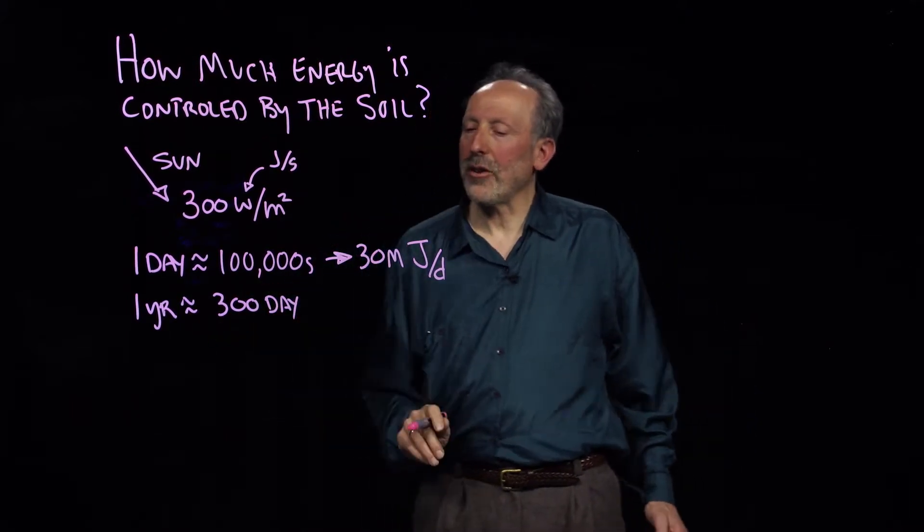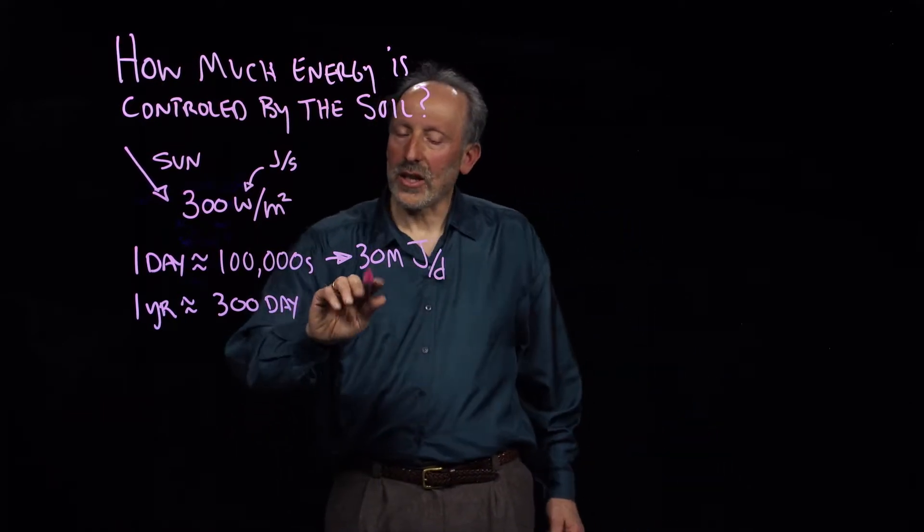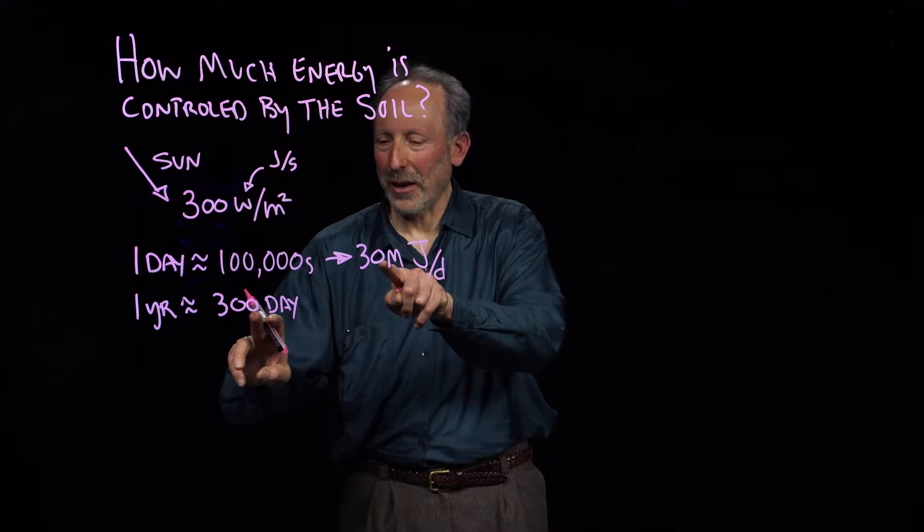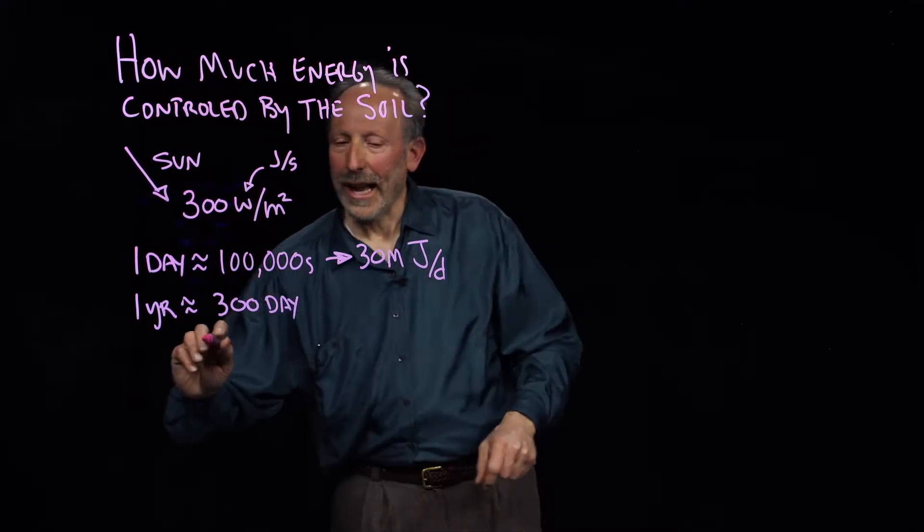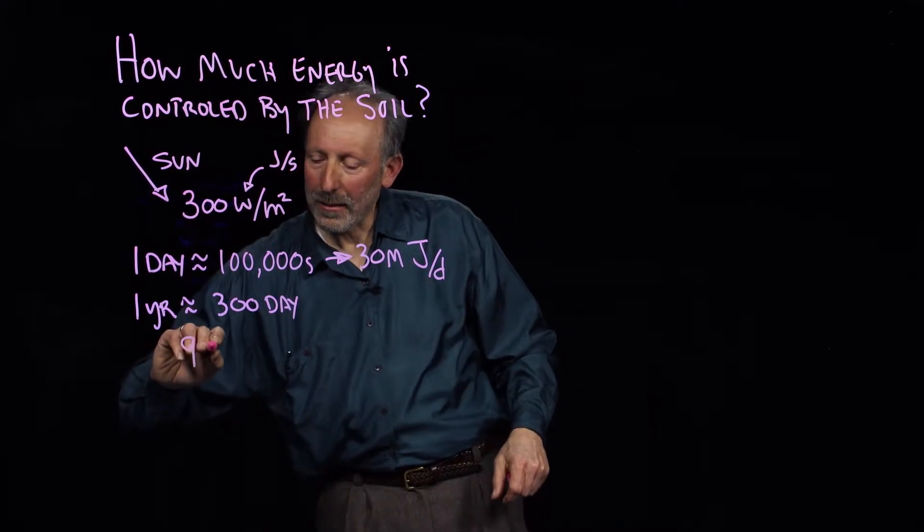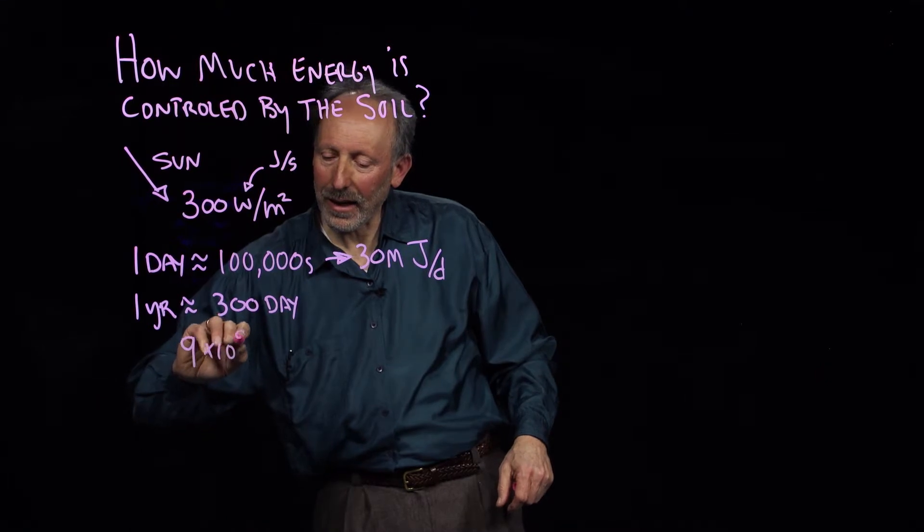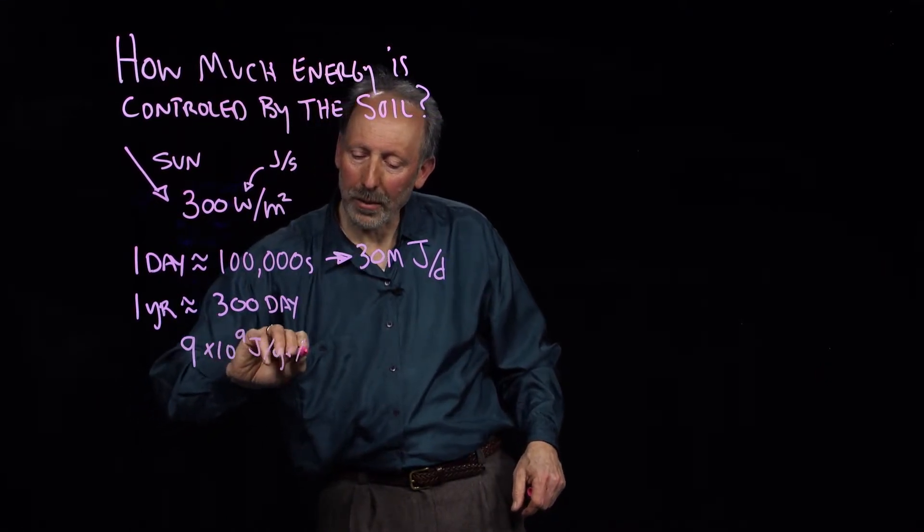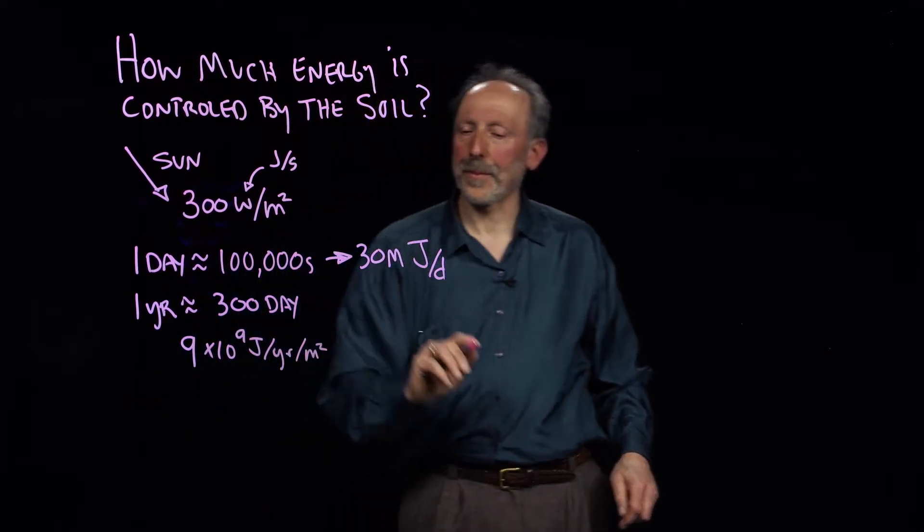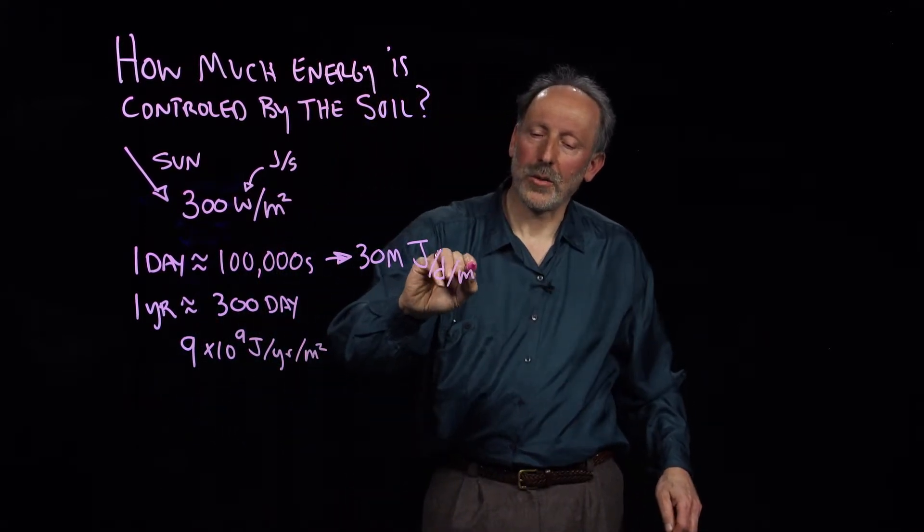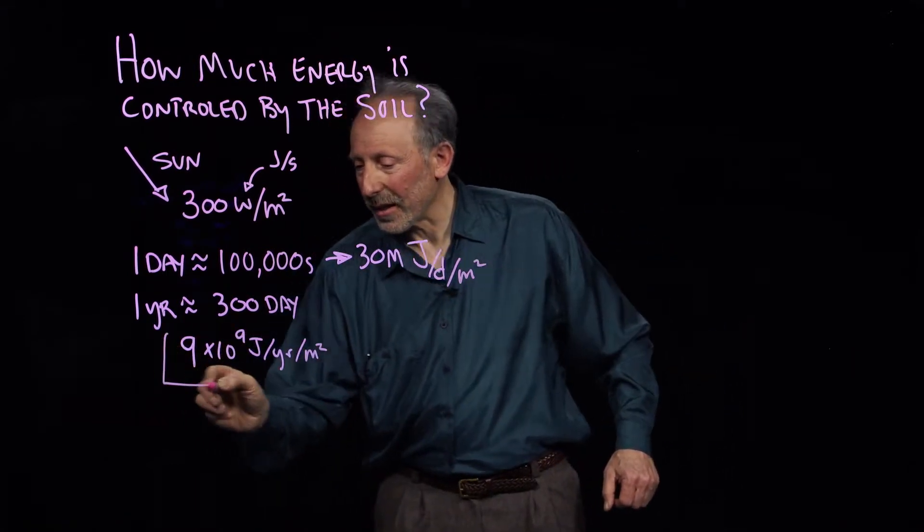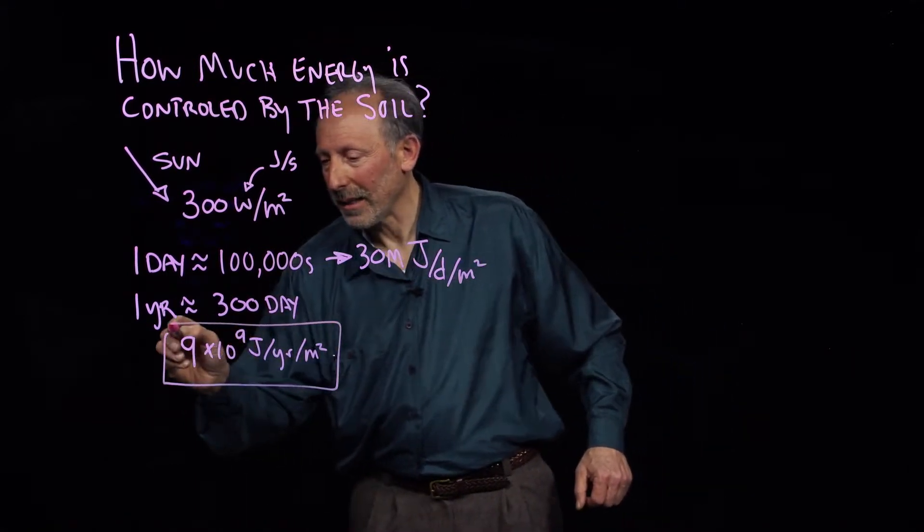And then we have to multiply that by another 300, and so that gives us 30 million, 300 million, 3 billion. It's about 9 times 10 to the 9th joules per year per meter squared. This is all per meter squared. So that's how much energy the sun is giving us, actually a lot of energy.